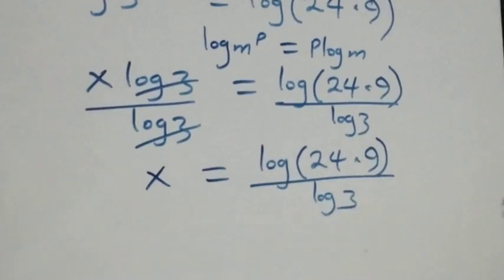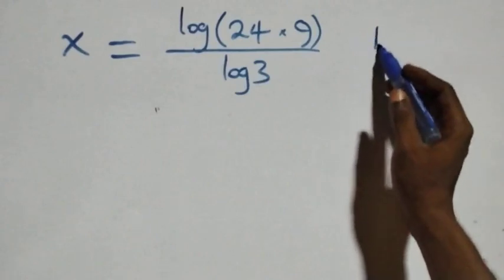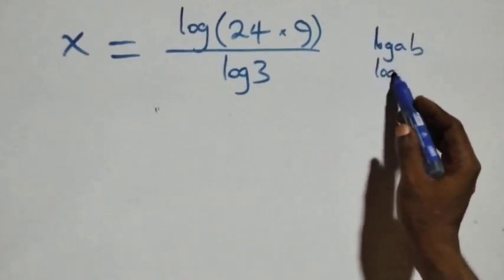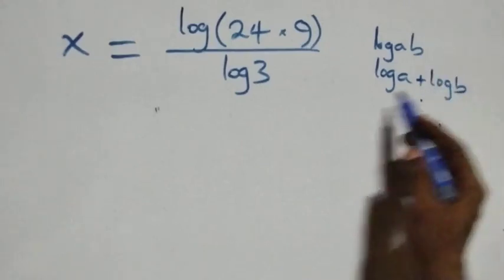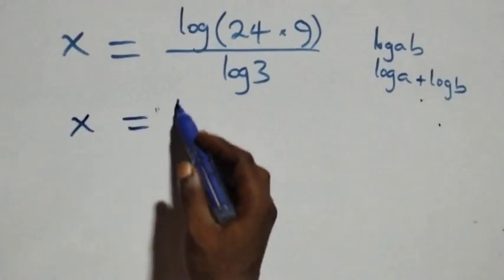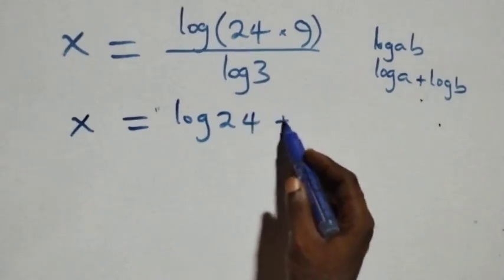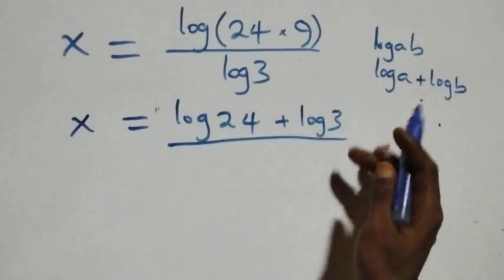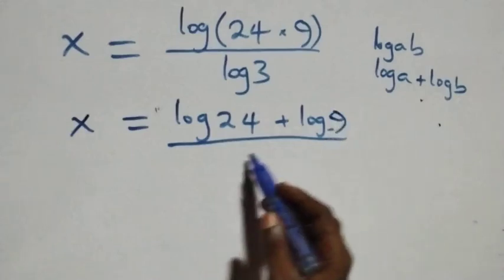This follows the law of logarithms: log a times b is the same thing as log a plus log b. So what we have here becomes x equals log twenty-four plus log nine, all over log three.